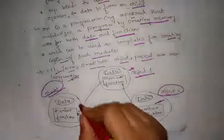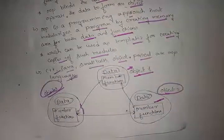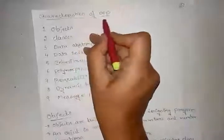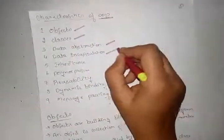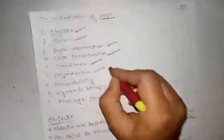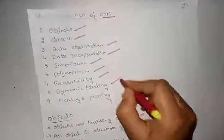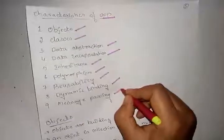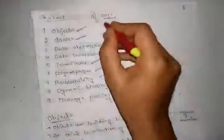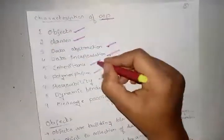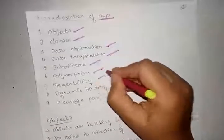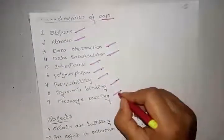The characteristics of object oriented programming are: objects, classes, data abstraction, data encapsulation, inheritance, polymorphism, reusability, dynamic binding, and message passing. There are nine characteristics of object oriented programming. Let's see them one by one.